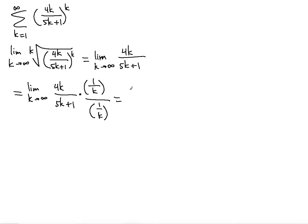So now that's going to give us 4 over 5 plus 1 over k. Now you can evaluate this limit. You can plug in the infinity. For the k, you will get 5 plus 1 over infinity, which is 4 over 5 plus 0, which is equal to 4 over 5.